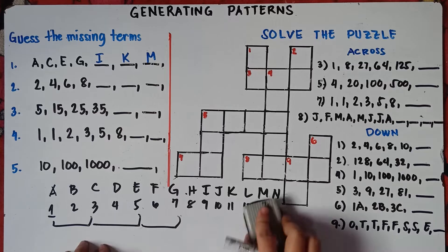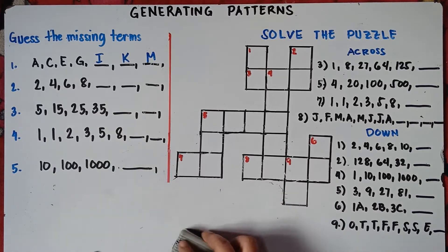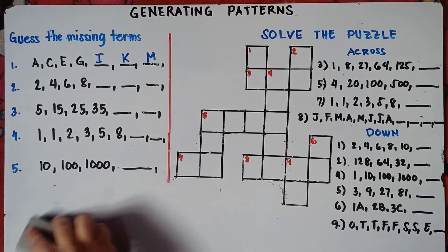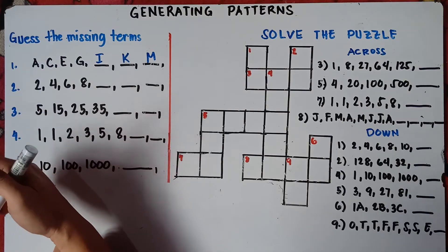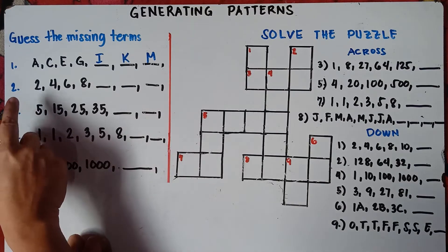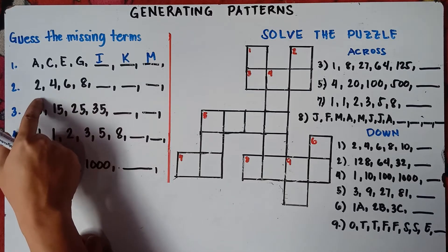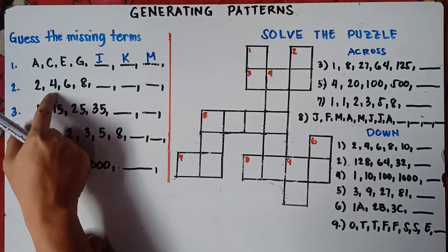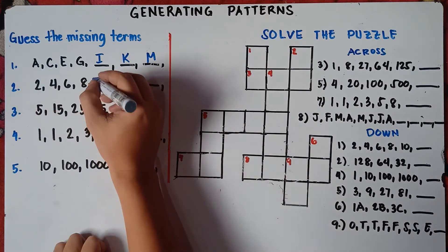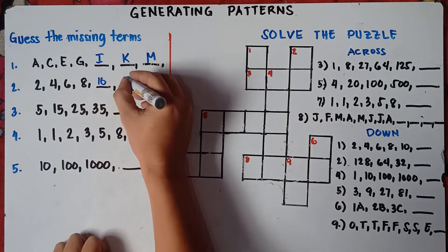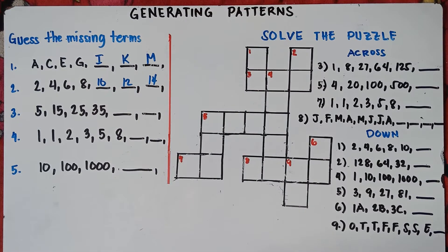Let's try number 2. We have 2, 4, 6, 8. As you can see, you simply add 2. So 2 plus 2 is 4, 4 plus 2 is 6, 6 plus 2 is 8, 8 plus 2 is 10, 10 plus 2 is 12, and 12 plus 2 is 14. Very easy for number 2 — you analyze the sequence and find the rule.